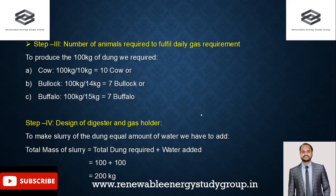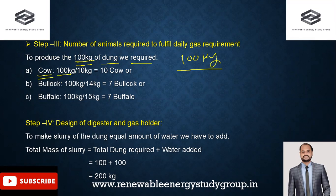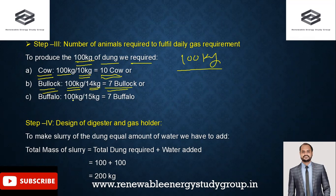We can then calculate how many animals are needed based on species. For cows (10 kg/day): 100 kg ÷ 10 = 10 cows required. For bullocks (14 kg/day): 100 kg ÷ 14 ≈ 7 bullocks required. For buffalo (15 kg/day): 100 kg ÷ 15 ≈ 7 buffalo required. We can also use combinations, such as five of one and three of another, to meet the 100 kg daily requirement.